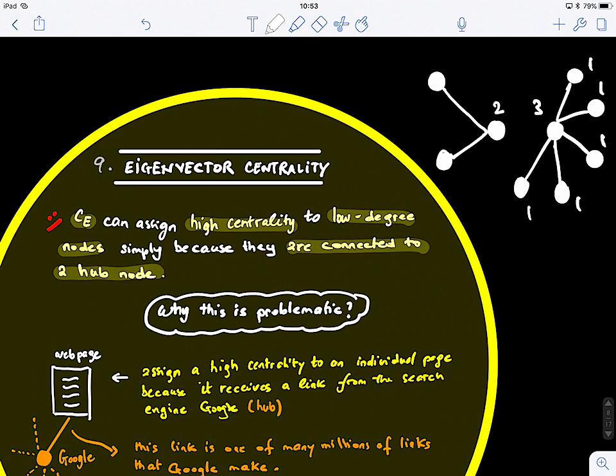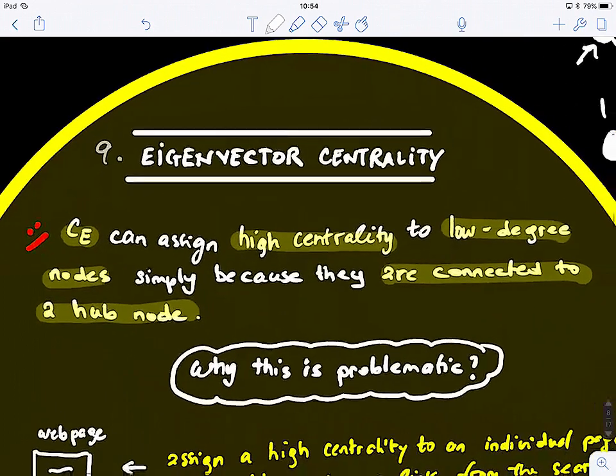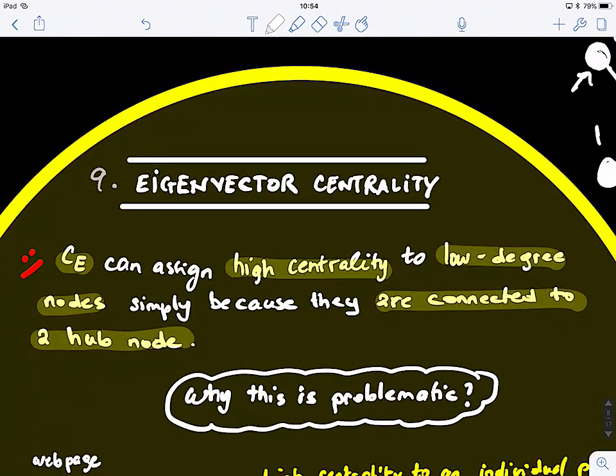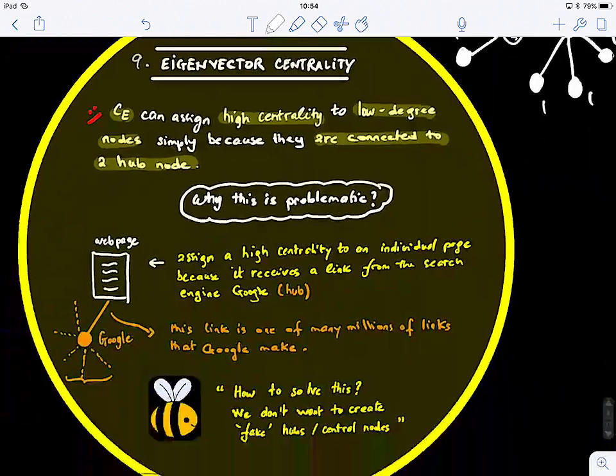But because the degree of the neighboring node to node 2 has 100 connections, right, so then when we compare these two, we will assign a higher similarity to which node? To this one. So, this is actually quite problematic because this node is actually connected to a hub node. Eigenvector centrality is a good measure. It addresses the limitation of degree centrality, but it's still problematic.